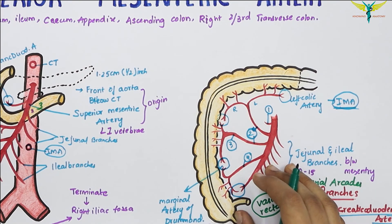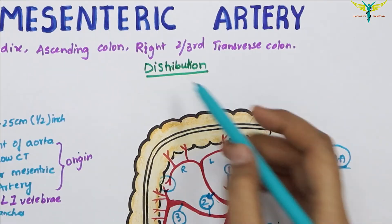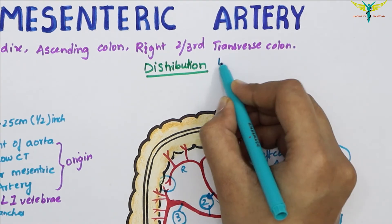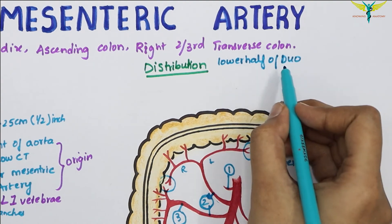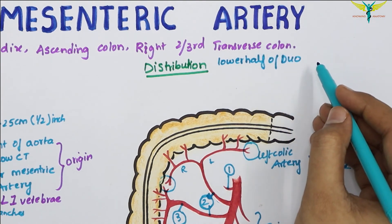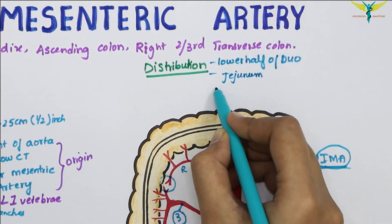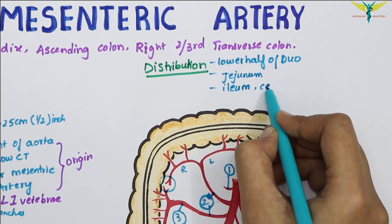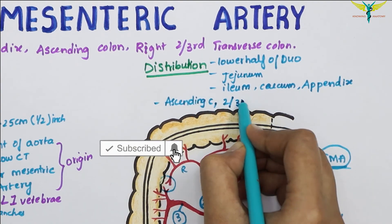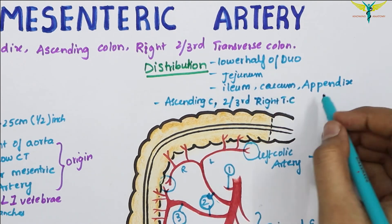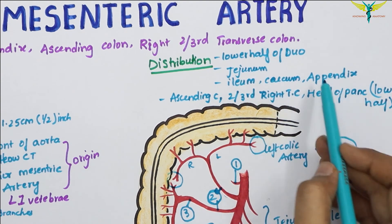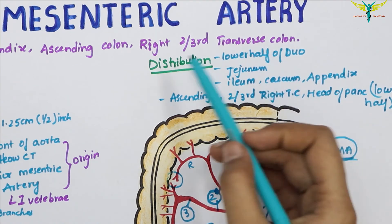The superior mesenteric artery is the artery of the midgut and hence supplies all derivatives of the midgut: the lower half of the duodenum (below the opening of the hepatopancreatic duct) via the inferior pancreaticoduodenal artery, the jejunum, the ileum, the cecum, the appendix, the ascending colon, the right two-thirds of the transverse colon, and the lower half of the head of the pancreas.